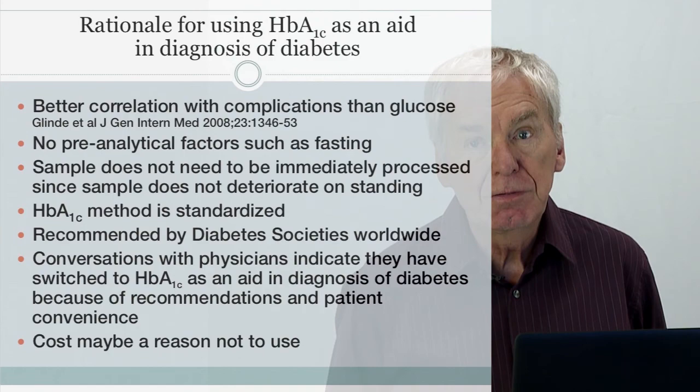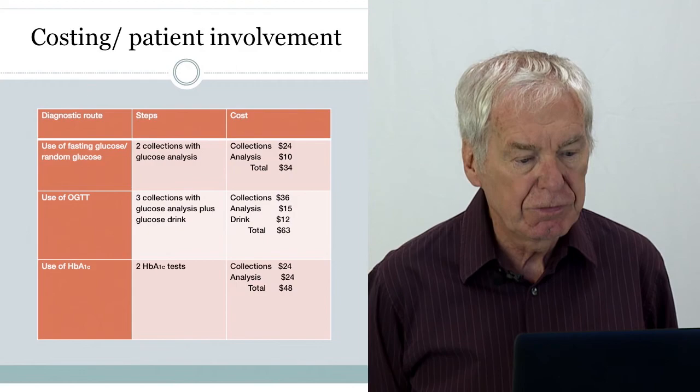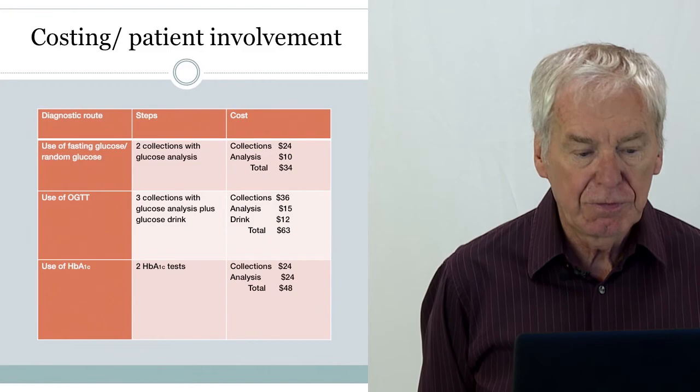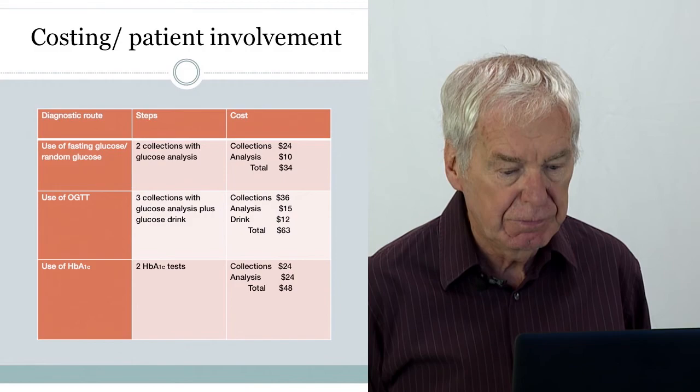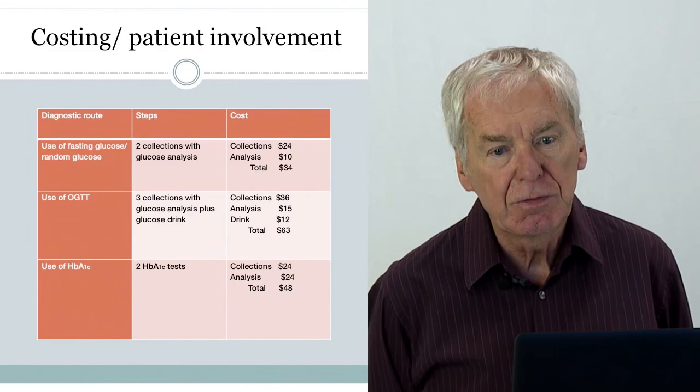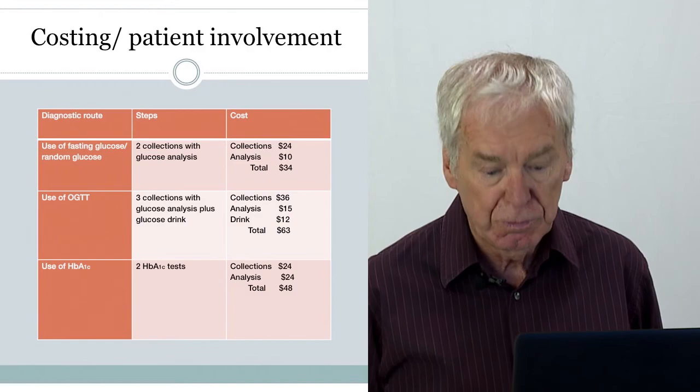Some people have suggested that cost may be a reason not to use A1c. In a comparison we performed, we took the cost of collecting and analyzing two glucose samples, two hemoglobin A1c samples, and the use of an oral glucose tolerance test followed by a fasting glucose. The argument that A1c is prohibitively expensive doesn't actually hold water.